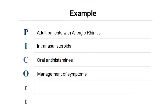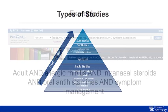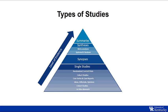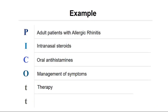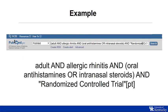Looking at our original example again, what type of question is it? It's a therapy question — we're looking at the best therapy. Now let's look at the last T: types of studies. This is a hierarchy of the various types of studies. You could be looking for a randomized controlled trial, a synopsis, or maybe a systematic review. You can search by the type of study in databases like PubMed. In this example, we might be interested in a randomized controlled trial. In PubMed, you can build a search and add randomized controlled trial as the type of study and receive results that are only randomized controlled trials.